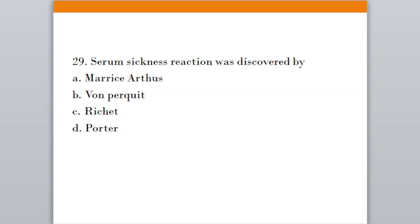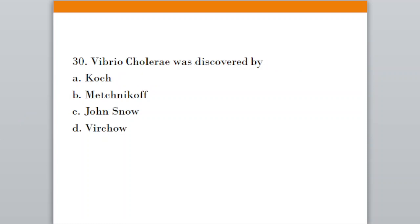Question number twenty-nine: Serum sickness reaction was discovered by. Option A, Mere Saathas; Option B, von Pirquet; Option C, Reshet; Option D, Potter. The correct answer is option B, von Pirquet. Question number thirty: Vibrio cholerae was discovered by Koch/Metchnikoff/John Snow/Virchow. The correct answer is option C, Metchnikoff.